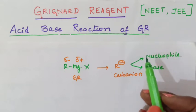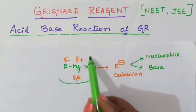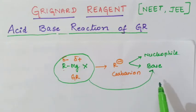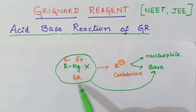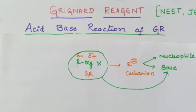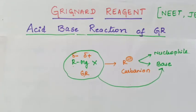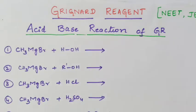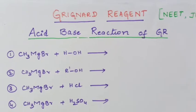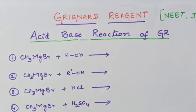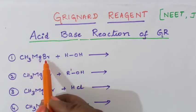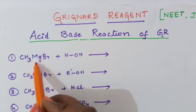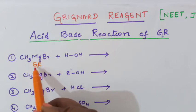In this reaction, we are going to see that Grignard reagent will be acting as a base. When you add acid to Grignard reagent, you can see an acid-base reaction taking place. We will take some examples and learn about acid-base reactions of Grignard reagent. Let us take the first example: CH3MgBr, that is methyl magnesium bromide — this is a Grignard reagent.